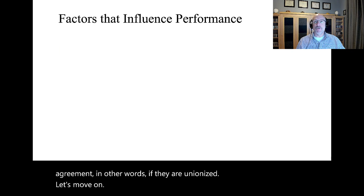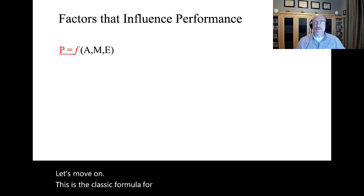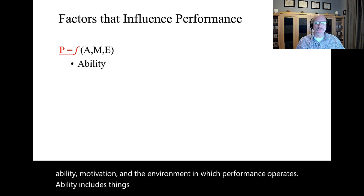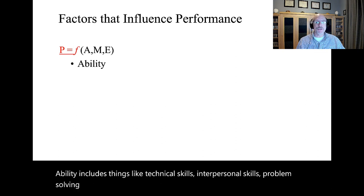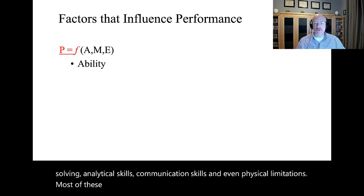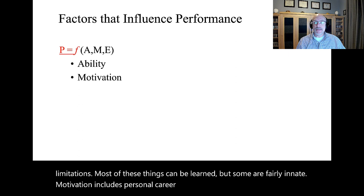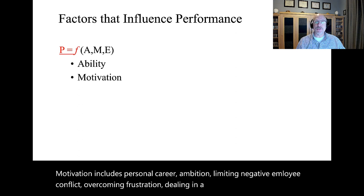This is the classic formula for performance. Performance is a function of ability, motivation, and the environment in which performance operates. Ability includes things like technical skills, interpersonal skills, problem solving, analytical skills, communication skills, and even physical limitations. Most of these things can be learned, but some are fairly innate. Motivation includes personal career ambition, limiting negative employee conflict, overcoming frustration, dealing in a fair manner to foster satisfaction, and setting clear goals and expectations.